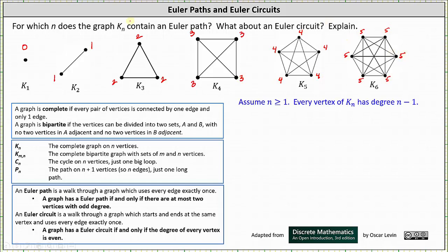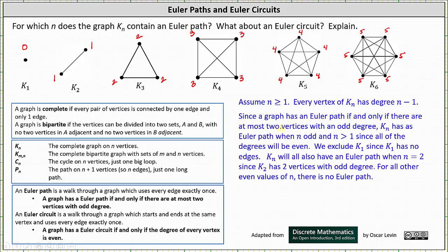Now to determine which values of n mean K sub n has an Euler path: since a graph has an Euler path if and only if there are at most two vertices with odd degree, K sub n has an Euler path when n is odd and n is greater than one, since all degrees will be even. Notice we exclude K sub one since K sub one has no edges. K sub n will also have an Euler path when n equals two, since K sub two has exactly two vertices with odd degree, which meets the condition. For all other even values of n, there is no Euler path.